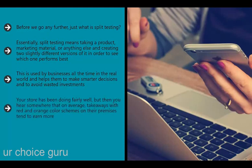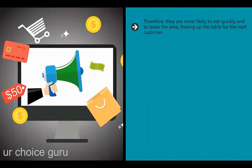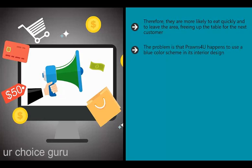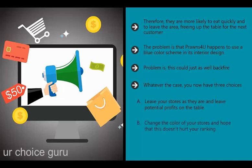Imagine you own a chain of fast-food restaurants that sell only prawn-based dishes. Your store has been doing fairly well, but you hear that takeaways with red and orange color schemes tend to earn more - because those colors increase the heart rate, making people slightly uncomfortable, so they eat quickly and leave, freeing up tables. The result is higher customer turnover and greater profits. However, your chain uses a blue color scheme. What if changing to red could backfire and hurt your brand recognition? You now have three choices: leave your stores as they are, change the color and hope for the best, or run a split test.